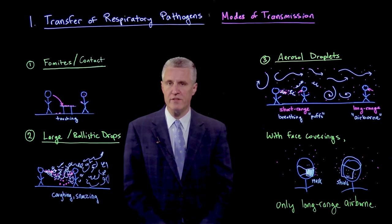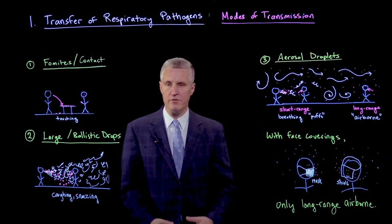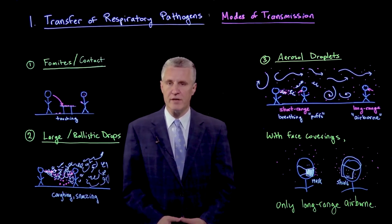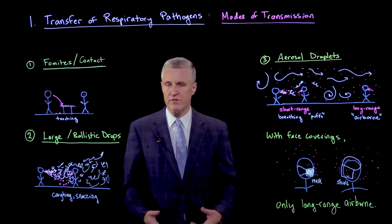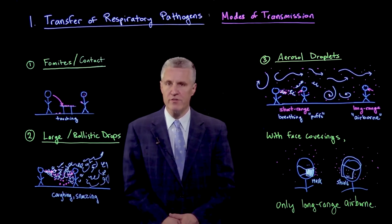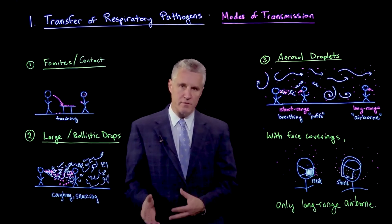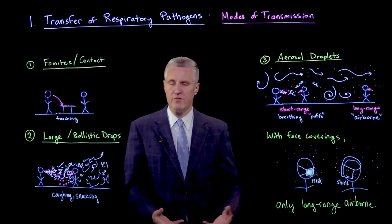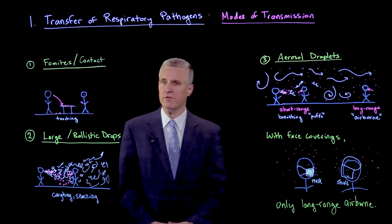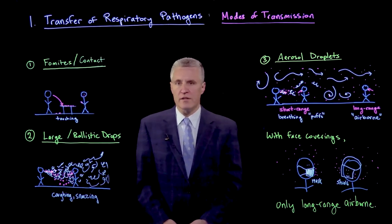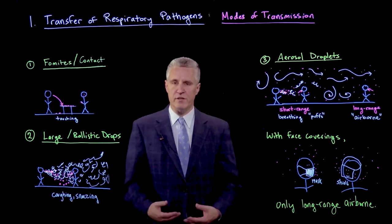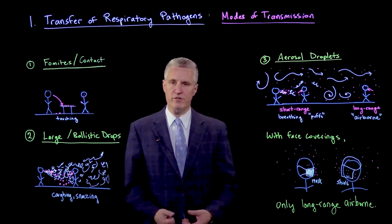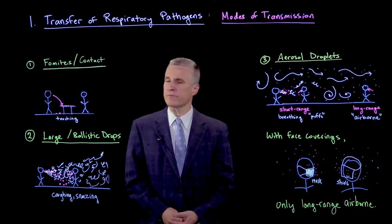Now that we understand the types of droplets emitted by different types of respiration and their evolution in the environment as a function of humidity and other factors, let's talk about the different ways that transmission can actually occur between two individuals of a respiratory pathogen.